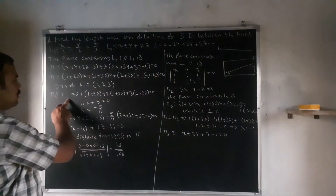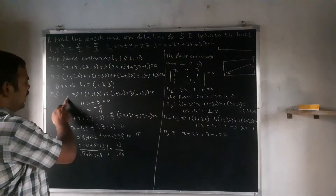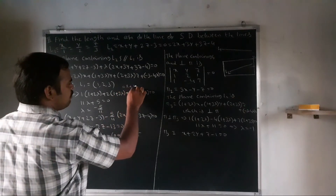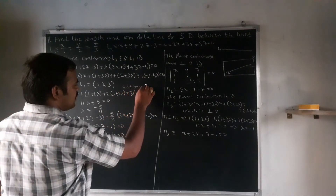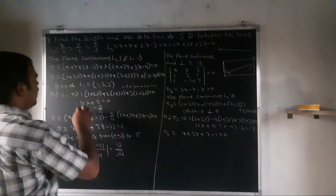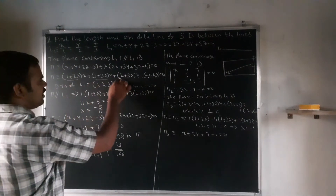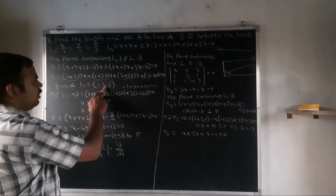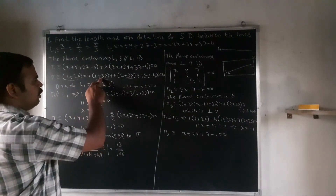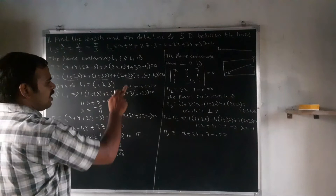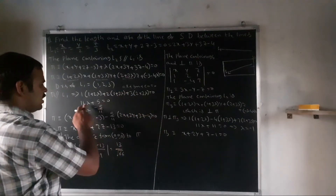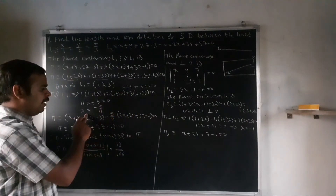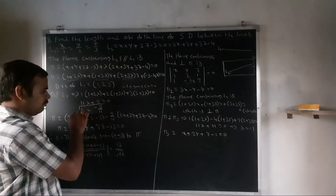Since plane π5 is parallel to L1, we use formula AL + BM + CN = 0. So: 1(1 + 2λ) + 2(1 + 3λ) + 3(2 + 3λ) = 0, which gives 11λ + 5 = 0, so λ = -5/11.